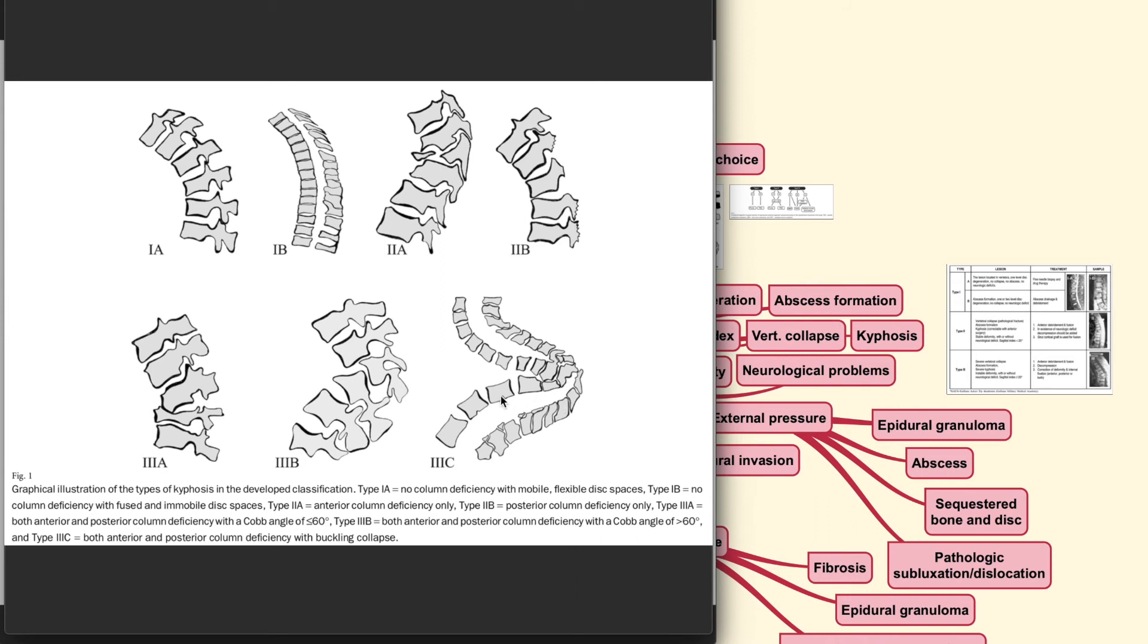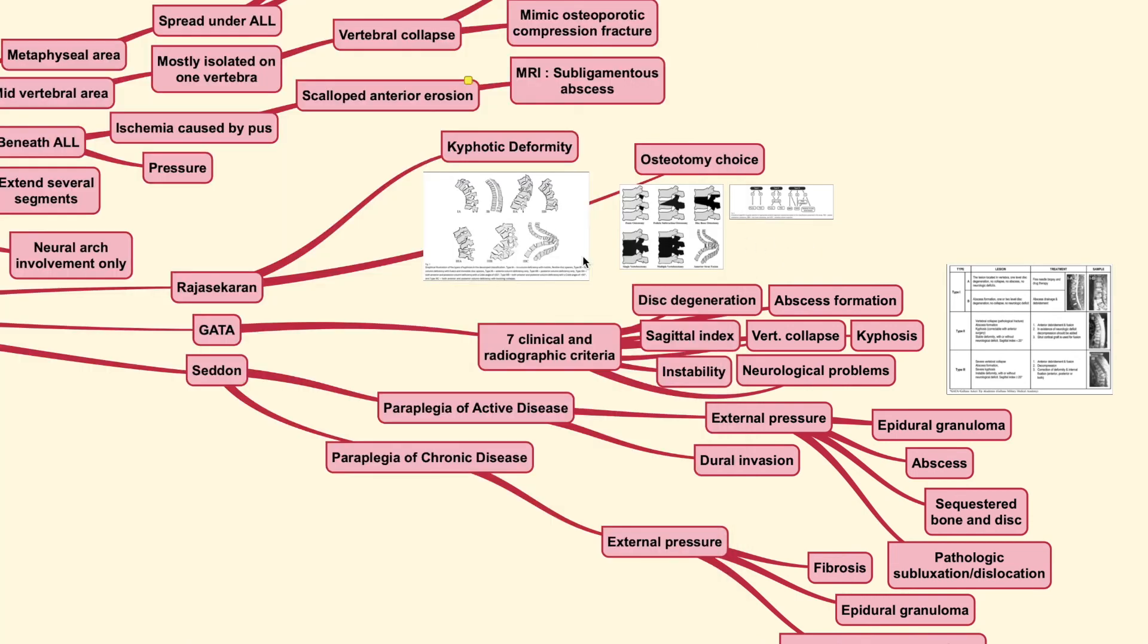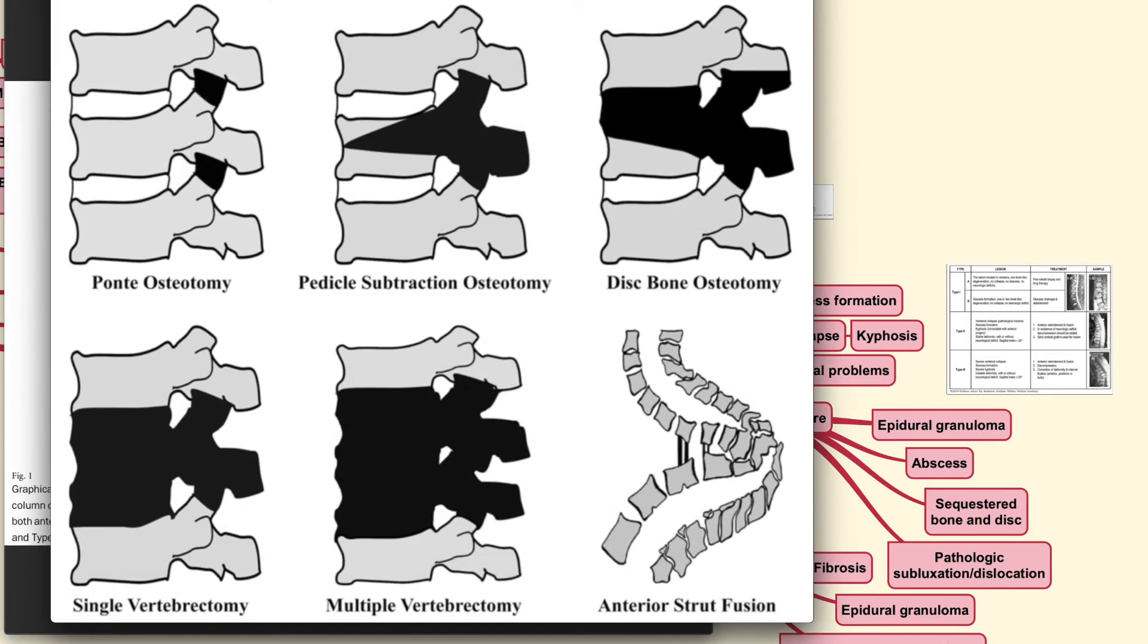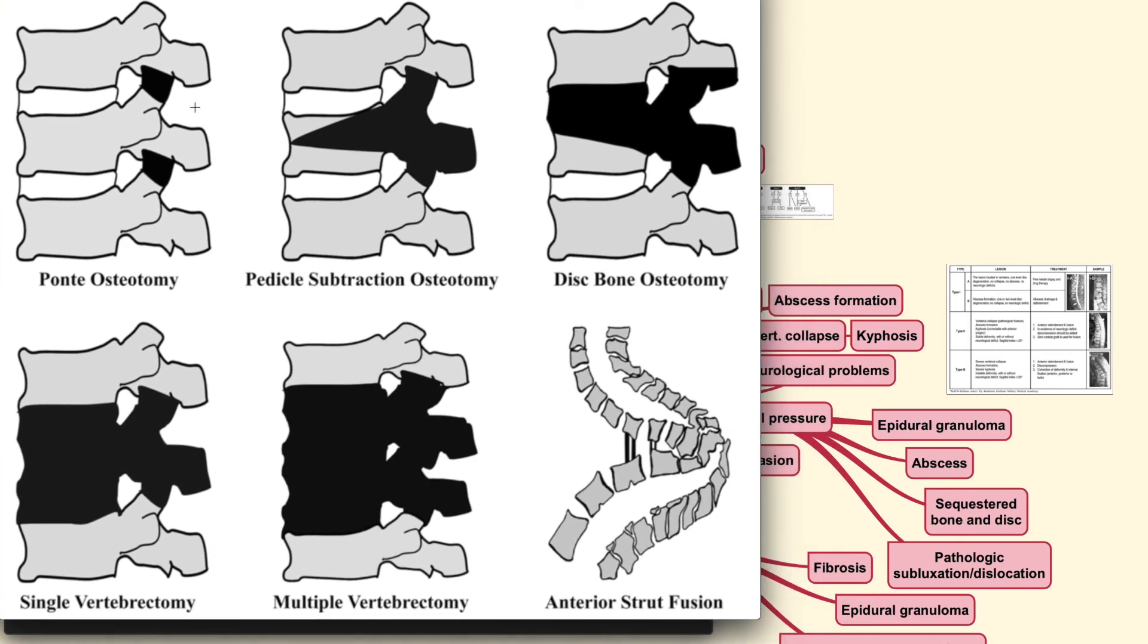We call it a buckling type of collapse when the anterior surface of the adjacent vertebrae can meet each other because it appears to be enfolded such as depicted here. Now, the question is, why do you need to classify into these types of conditions? Because these types of conditions help us guide the osteotomy of choice.